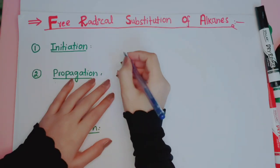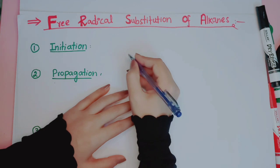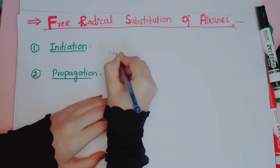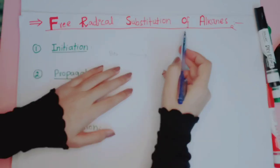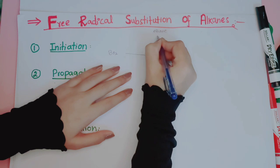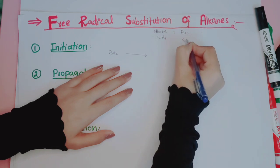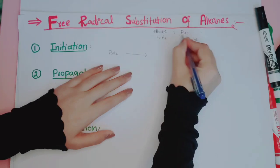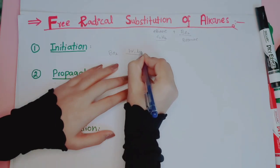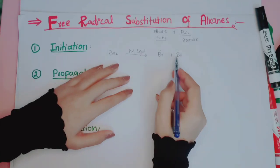We initiated the reaction and got a reactive species. Now let me write out the reaction: we take ethane (C₂H₆) and react it with bromine (Br₂). In the initiation step, the bromine molecule is exposed to light and we get two free radicals of bromine.